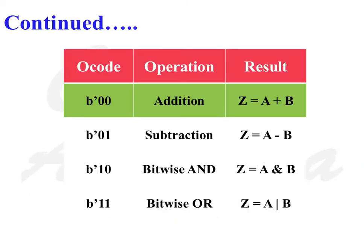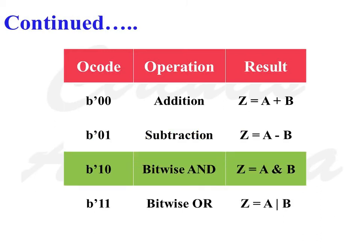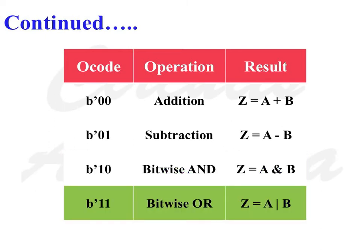This is the truth table of the arithmetic and logic unit. When O-Code is equal to 0-0, addition operation is performed. When O-Code is equal to 0-1, subtraction operation is performed. When O-Code is equal to 1-0, bitwise AND operation is performed. And when O-Code is equal to 1-1, bitwise OR operation is performed.